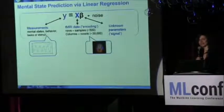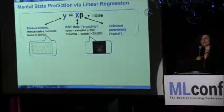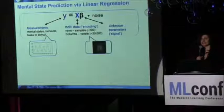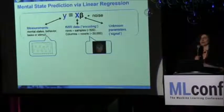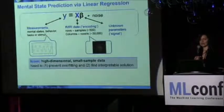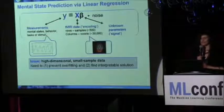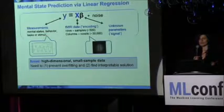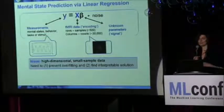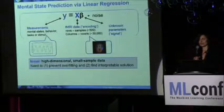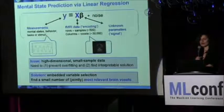The simplest model you can imagine: let fMRI data be your design matrix and try to find a linear regression model — the coefficient vector — that can accurately predict the output response variable y, for example the pain the person experiences. The data are high dimensional, small sample, so simple linear regression won't work — it will overfit. Anything unregularized will overfit, so you need regularization. At the same time, you want interpretable solutions. So embedded variable selection is the way to go.